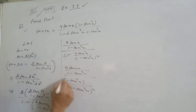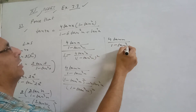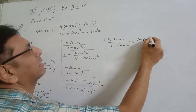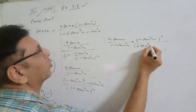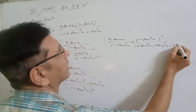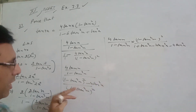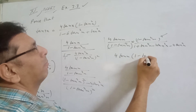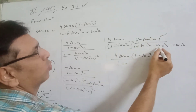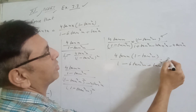For the denominator, we have 1 minus tan square 2x, which is 1 minus the whole square of 2 tan x upon 1 minus tan square x. Taking LCM, this becomes 1 minus tan square x whole square minus 4 tan square x, all over 1 minus tan square x whole square. So we get 4 tan x into 1 minus tan square x upon 1 minus 6 tan square x plus tan power 4x.